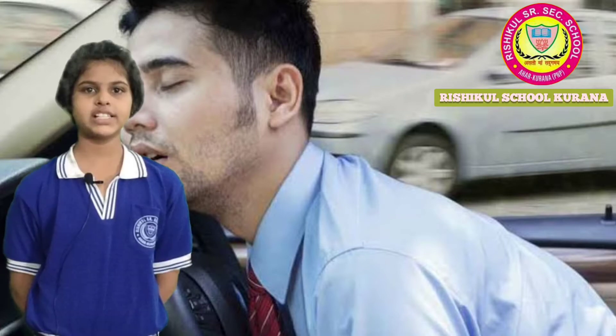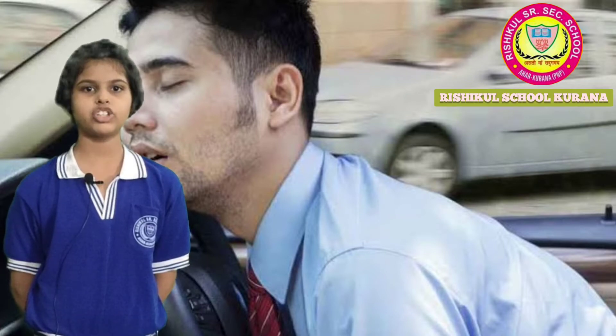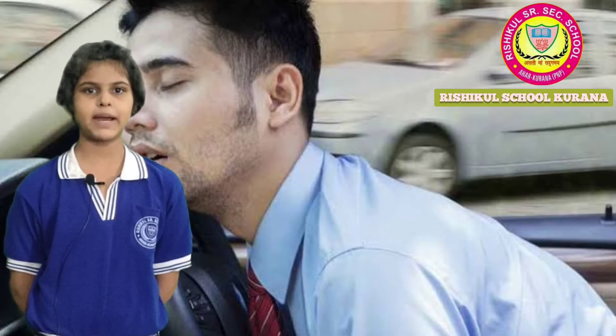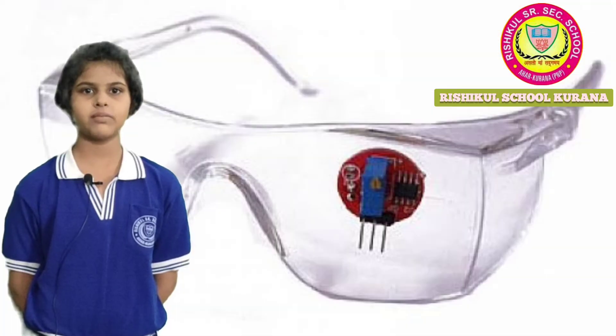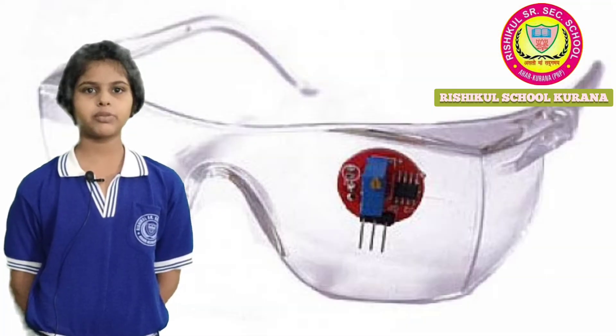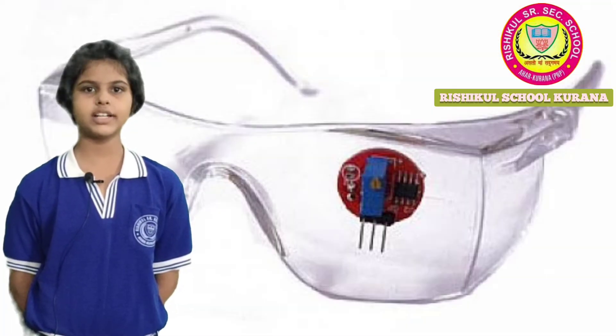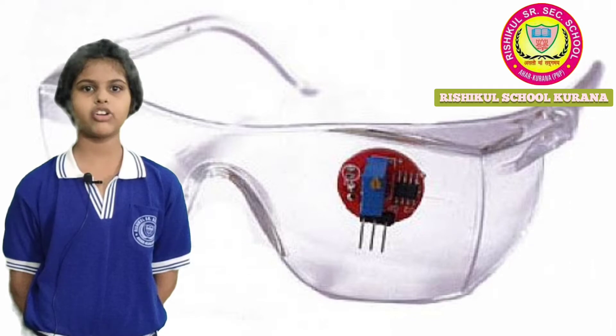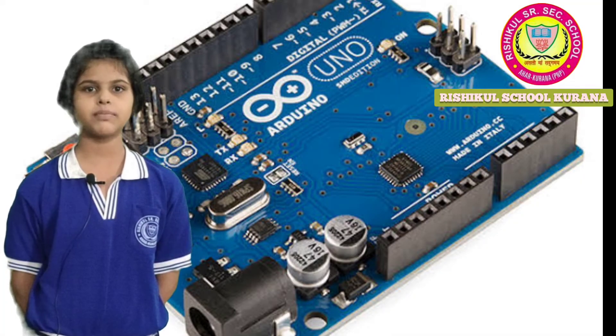First of all, we will discuss the components required for this project. First is the eye blink sensor, a small vibrator that produces some vibration, an Arduino, and some connecting wires or jumper wires.